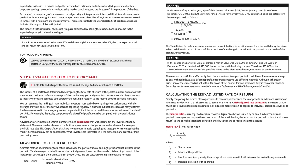The expected total returns for each asset group are calculated by adding the expected annual income to the expected capital gain or loss for each group. For example, if stock prices are expected to increase 10% and dividend yields are forecasted to be 4%, then the expected total pre-tax return for equities would be 14%.